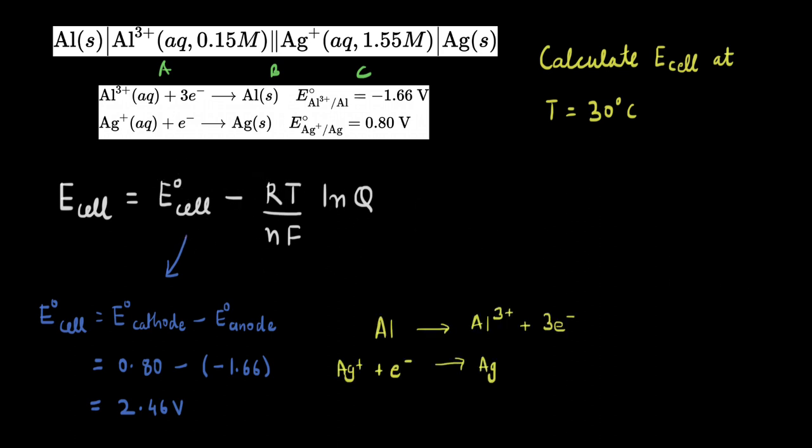Now, before we calculate the next part, let's write down the half cell reactions like this. On the cathode part, which is on the right side, we have the reduction half reaction, which is written like this. And on the anode side, we have the oxidation half reaction, which is written like this.